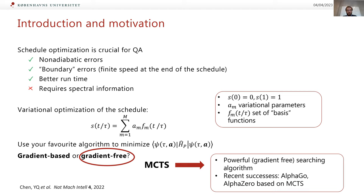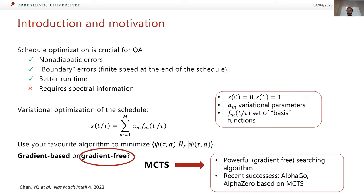If we want to minimize a classical function of a number of parameters we have two main approaches: gradient-based approaches or gradient-free approaches. Among gradient-free approaches, one that has been particularly popular in recent years is Monte Carlo tree search, and this algorithm proved to be extremely powerful behind the artificial intelligence approach to board games like Go and chess — both Alpha Go and Alpha Zero are based on Monte Carlo tree search.